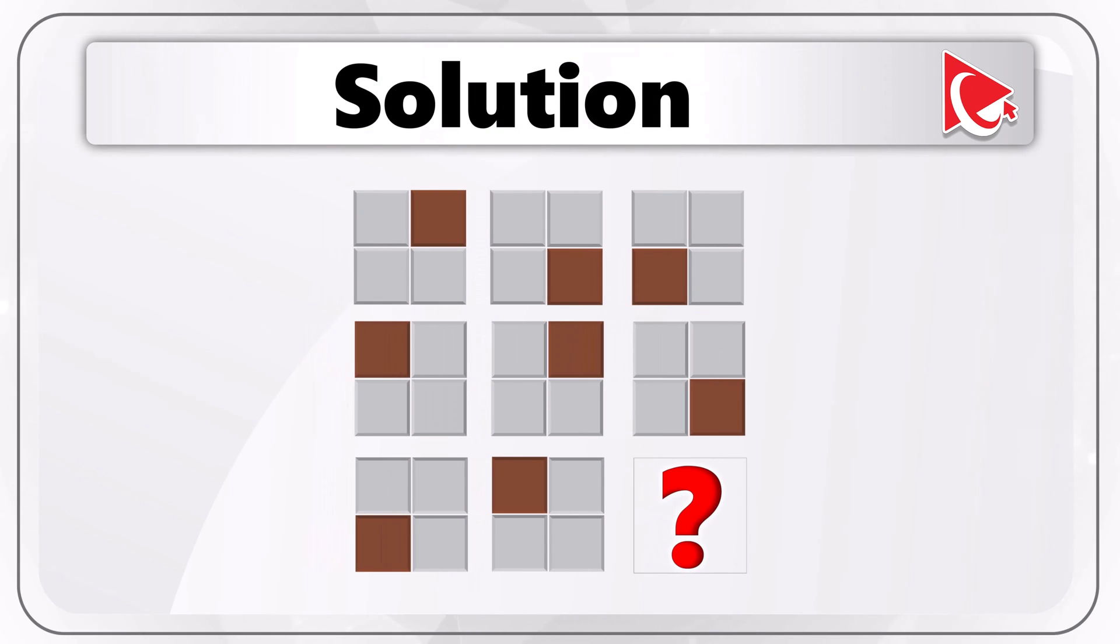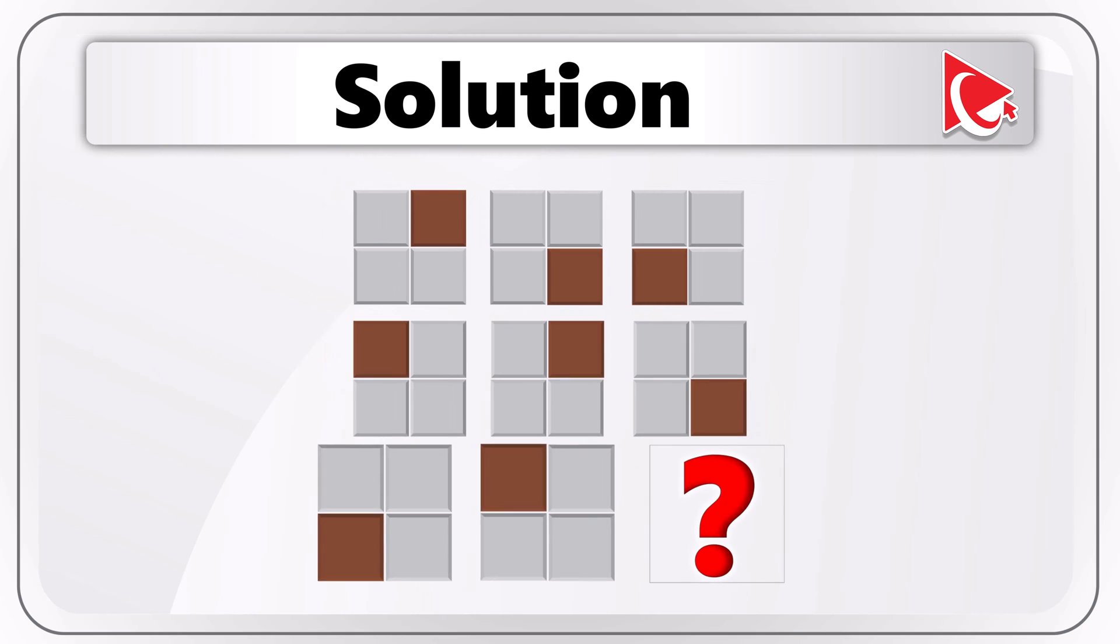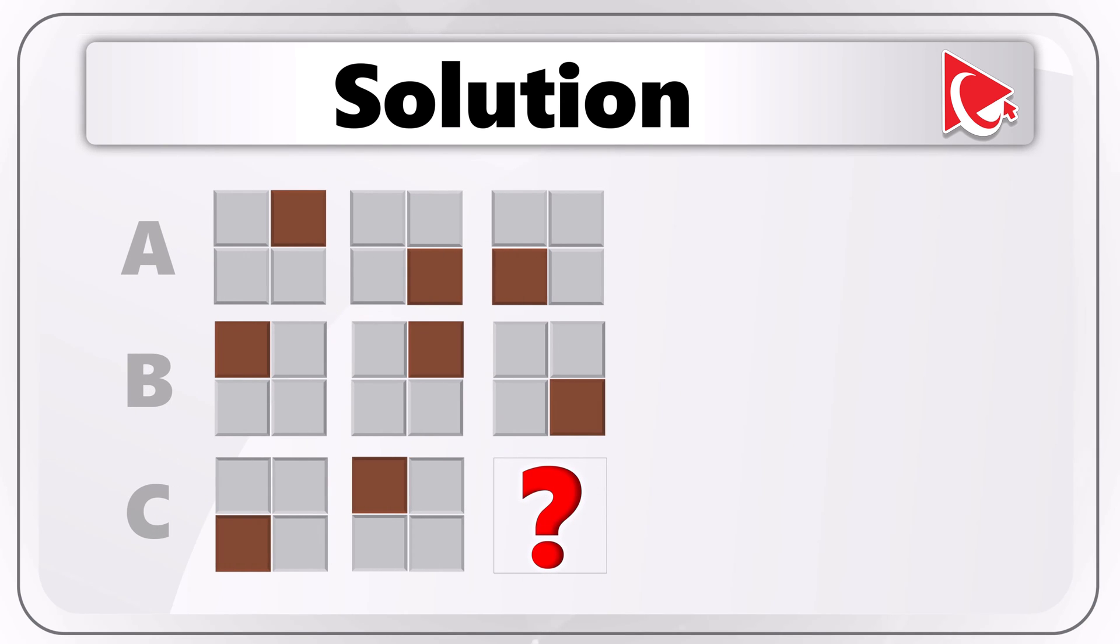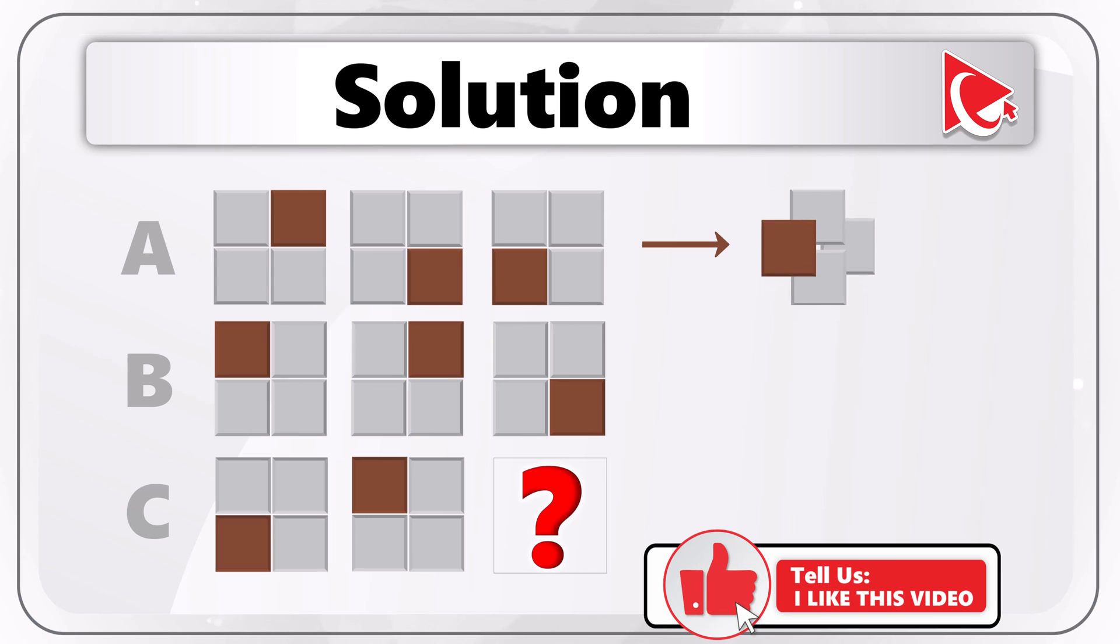To better understand the rows, let's mark each one of them with a letter. From top to bottom, the rows will be A, B, and C. Now let's look closely at the darker squares in row A. From left to right, the darker square shifts clockwise when we go to the next item.